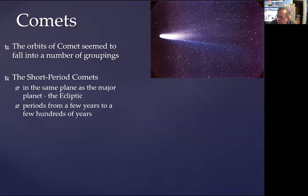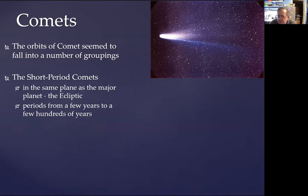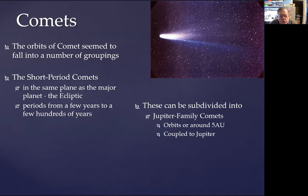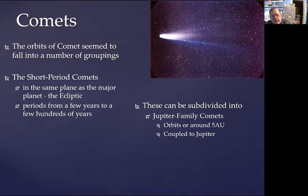The ecliptic is where the planets orbit, so the solar system is basically flat, and most of these short-period comets lie within that same plane. They have orbital periods ranging from just a few years right out to perhaps a hundred years or so. We can further subdivide them into Jupiter family comets — there seem to be quite a number that have periods related to the orbital period of Jupiter, and their farthest distance from the sun, their aphelion, is around about five astronomical units, which is where Jupiter orbits.